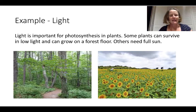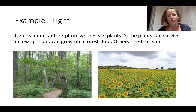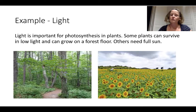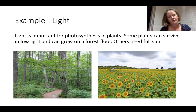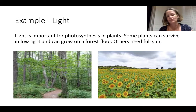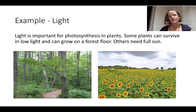Light is key because it allows photosynthesis, and plants have to be at the beginning of all food webs and food chains. We can think about adaptations — some plants are adapted to survive in very low light conditions, like on the forest floor, while others need full sun. And the amount of plants that are growing will affect the ecosystem that depends upon them.